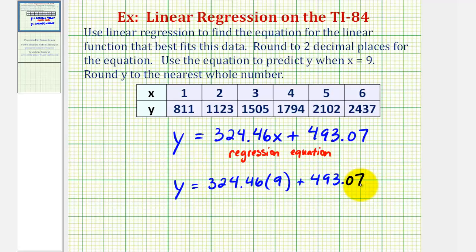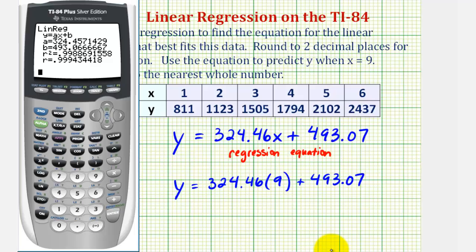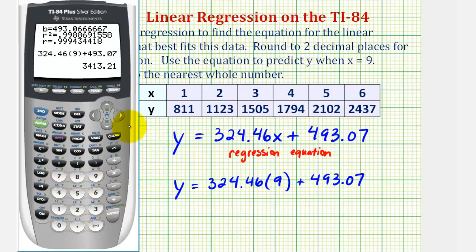Now we'll go back to the calculator and round this to the nearest whole number. So our prediction is y = 3413.